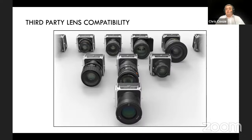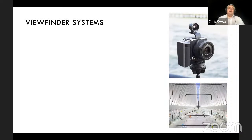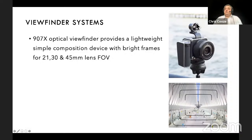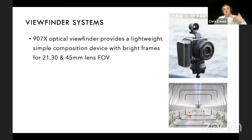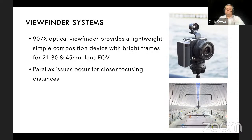Moving on to the differences. The first main one is the viewfinder systems. The optical viewfinder is an accessory that mounts into the top of the 907 body, with bright line frames for the 21mm, 30mm, and 45mm lenses. For longer lenses, it will be an estimation. When focusing more closely — within about two meters — the optical finder and the camera will see slightly different fields of view, so you need to bear that in mind.